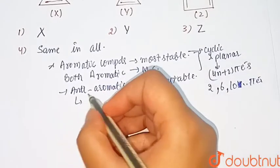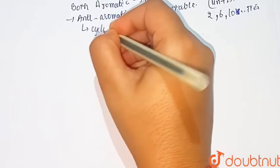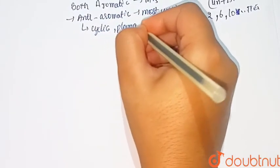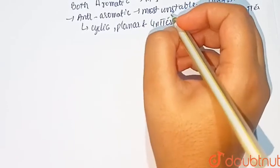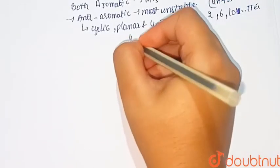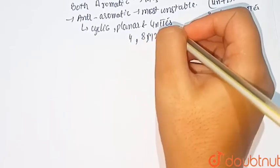Now what is anti-aromatic? This is also similar - cyclic, planar - but it have 4n pi electrons: 4, 8, 12 pi electrons.